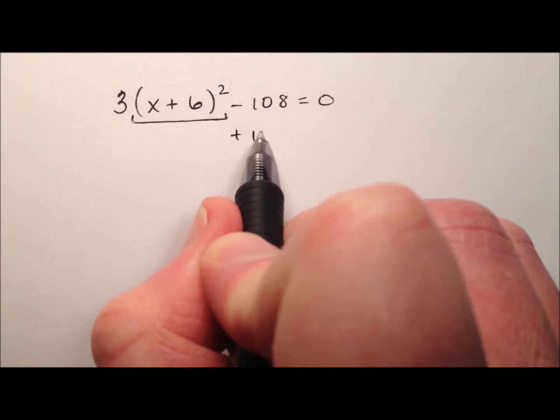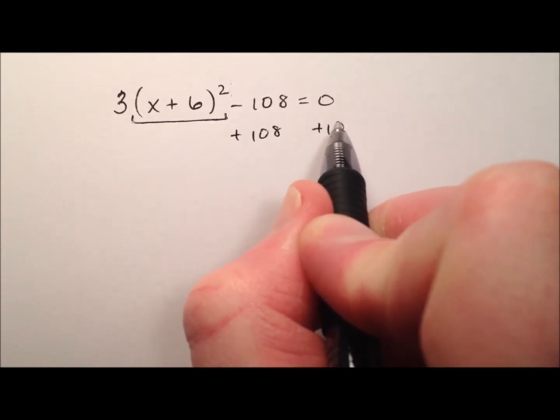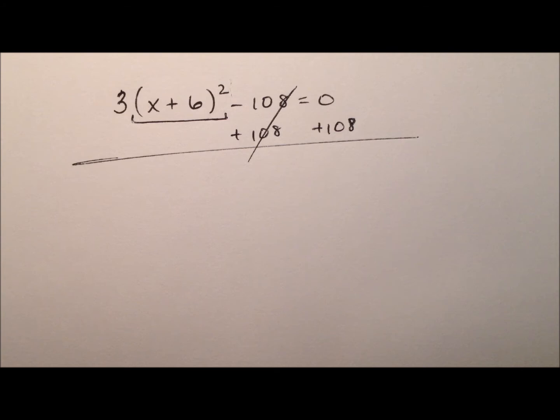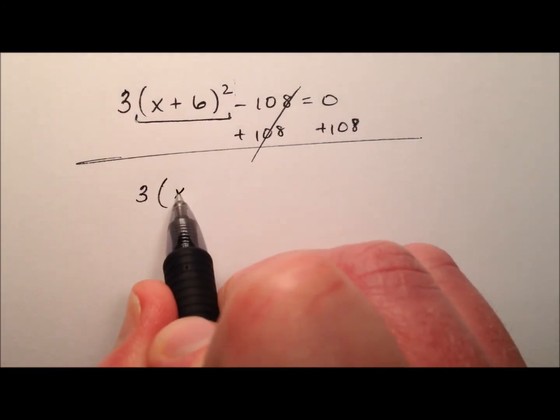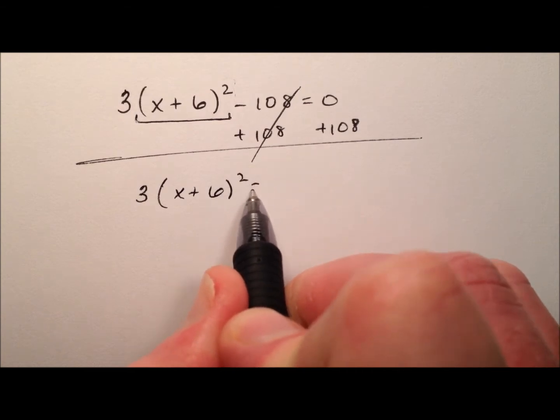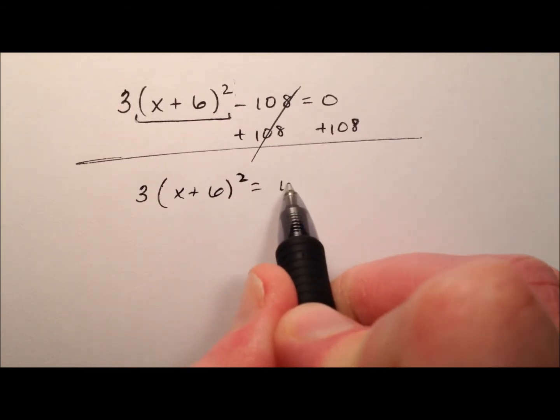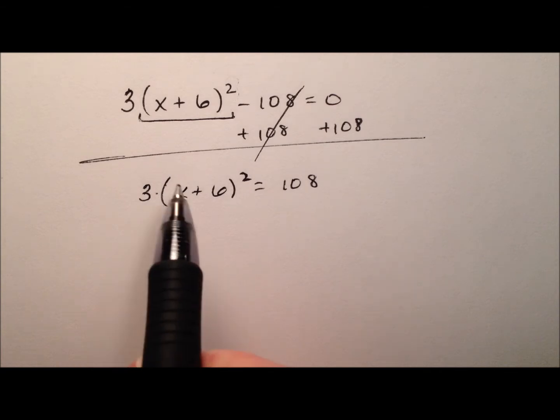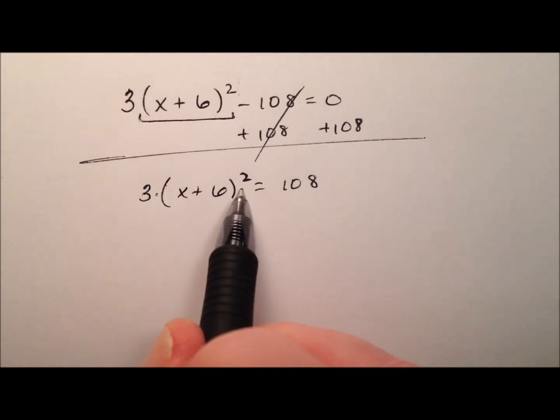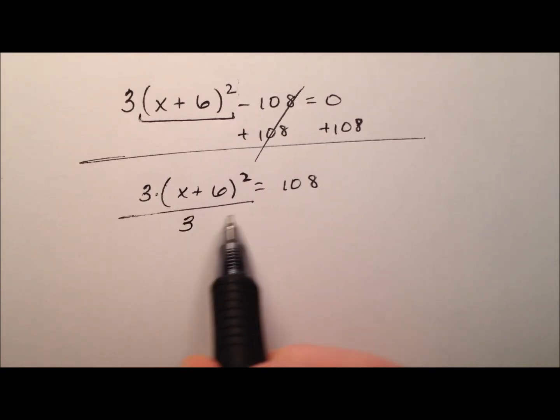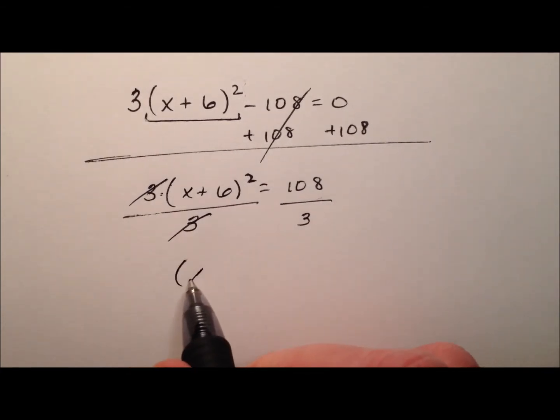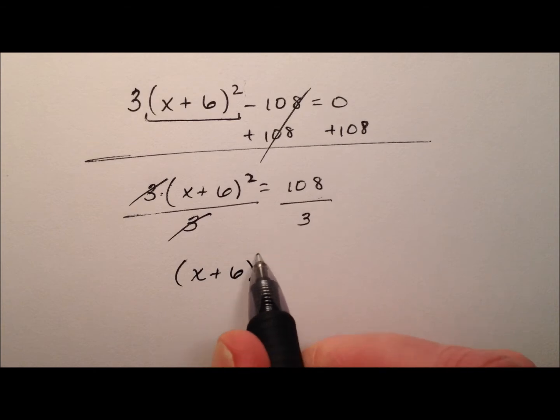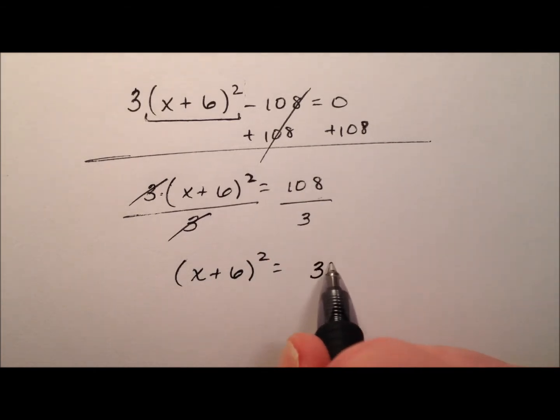In order to do that, let's use some inverse operations and we'll start by adding 108 to both sides. The left side has this 3 still out front with this perfect square quantity and then equals 108. An inverse operation for this 3 being multiplied here is division. So let's divide both sides by 3. And so now we'll see that x plus 6 quantity squared equals 108 divided by 3, which is 36.